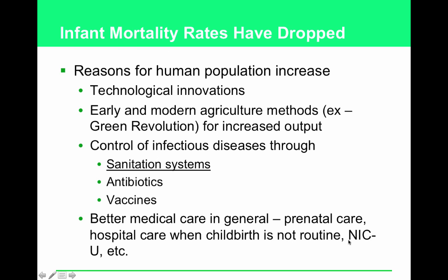Better medical care specifically has to do with infant mortality rate. It's everything from prenatal care — the care of a woman when she's pregnant — to hospital care when childbirth is not routine. In third world countries where women have to travel days to reach a place to give birth, you can die in childbirth; it happens routinely. NICUs — where premature babies go — are not available in other countries. If your baby's born prematurely, it dies. If there are problems during childbirth, the baby dies and the mother dies. Better medical care in general has caused infant mortality rates to drop.